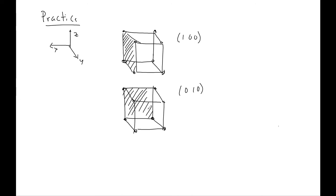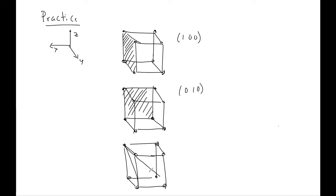Now let's pick a slightly more complicated example — a diagonal lattice plane. The Miller indices of this one are (1̄ 1 1). A vector normal to this plane points a little bit up in the positive Z direction, a little bit toward you in the positive Y direction, and a little bit to the right in the negative X direction. That's how we arrive at (1̄ 1 1) as the Miller indices for this lattice plane. So this has been a whirlwind tour of the reciprocal lattice. The next mini lecture will talk about X-ray diffraction, which is a closely related topic. We'll see you next time.